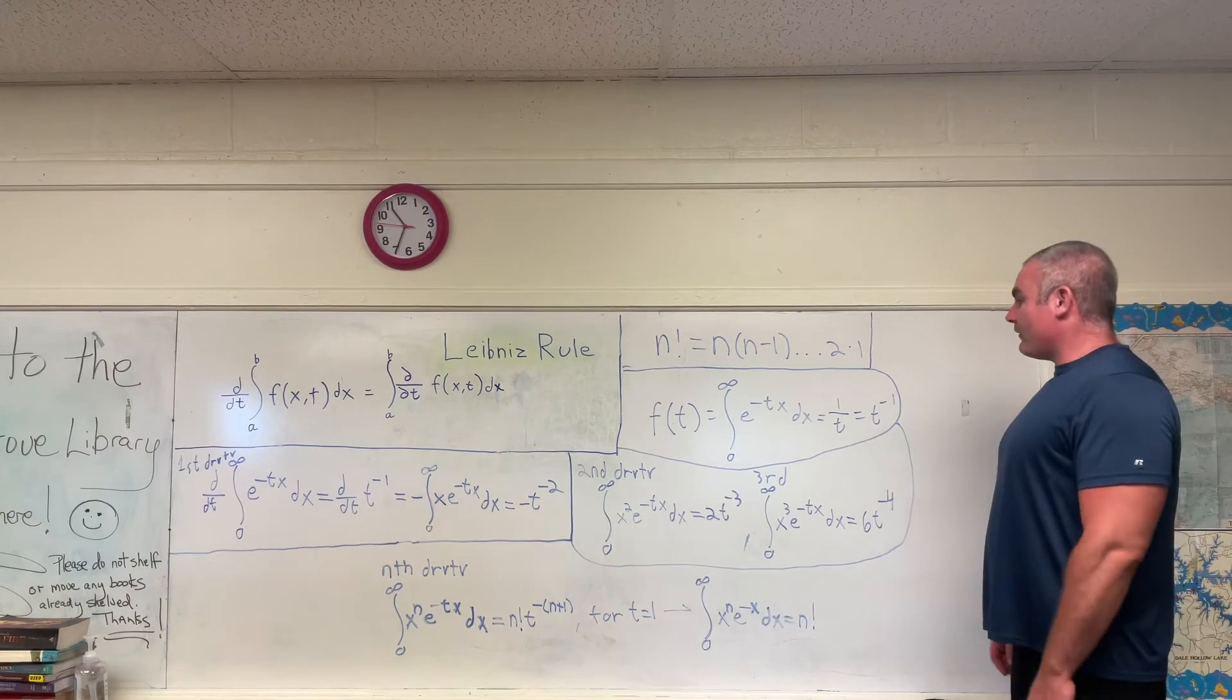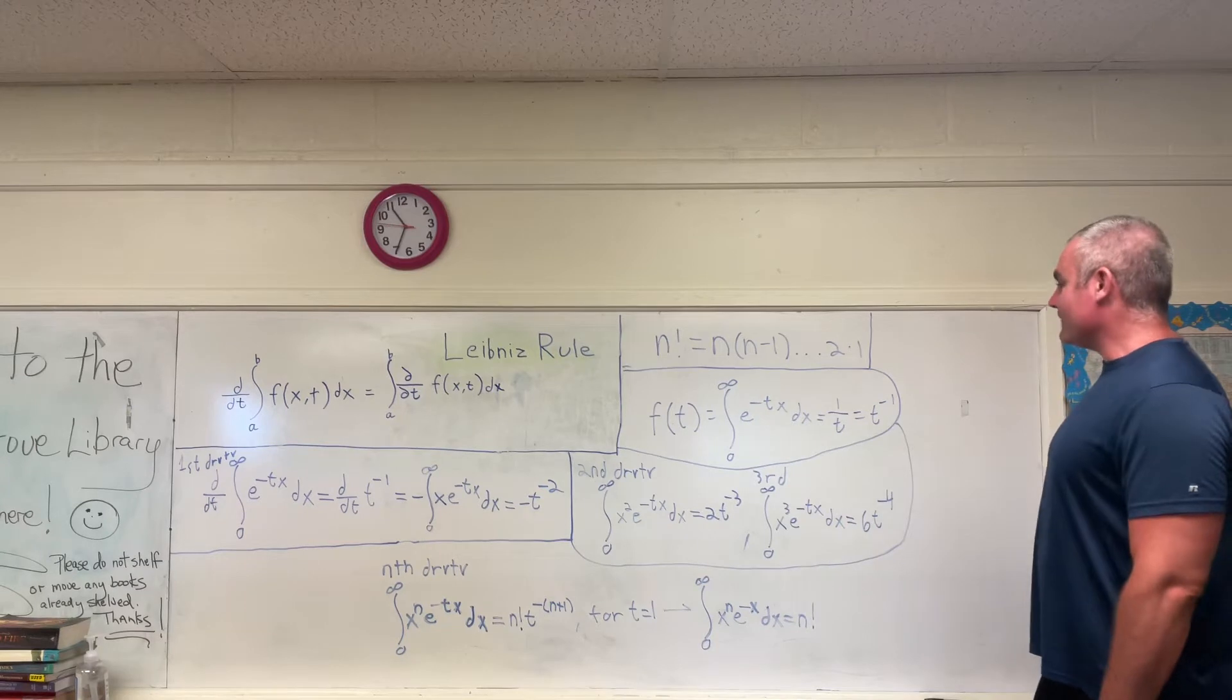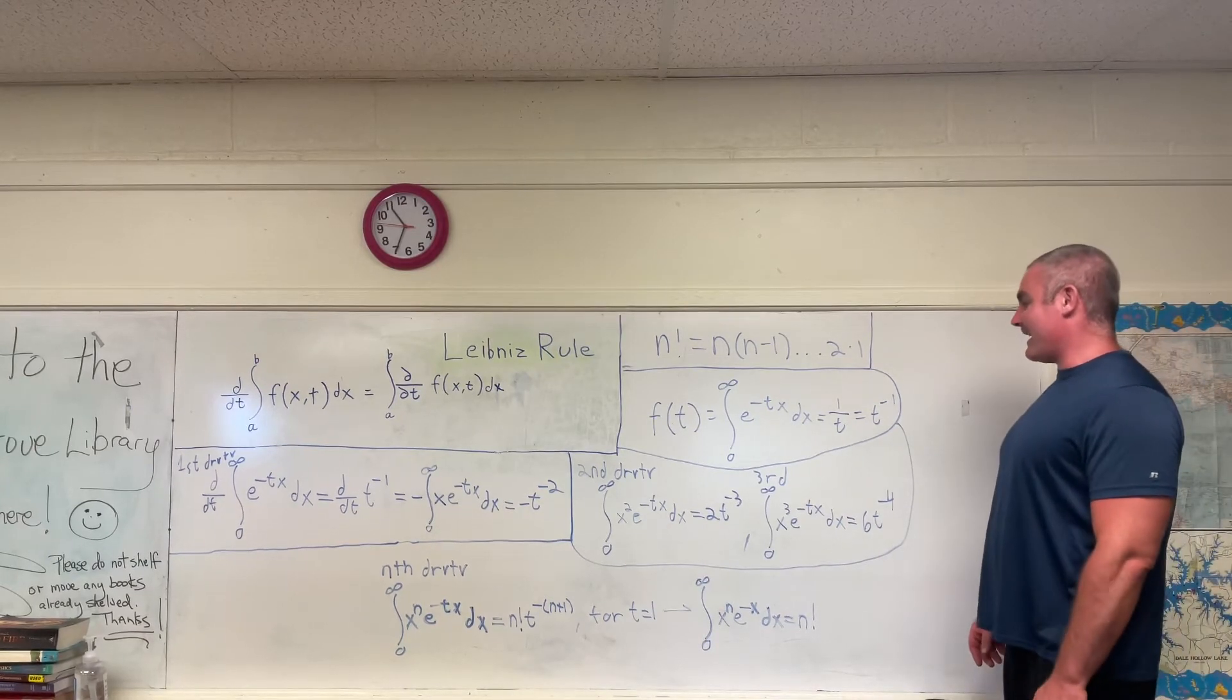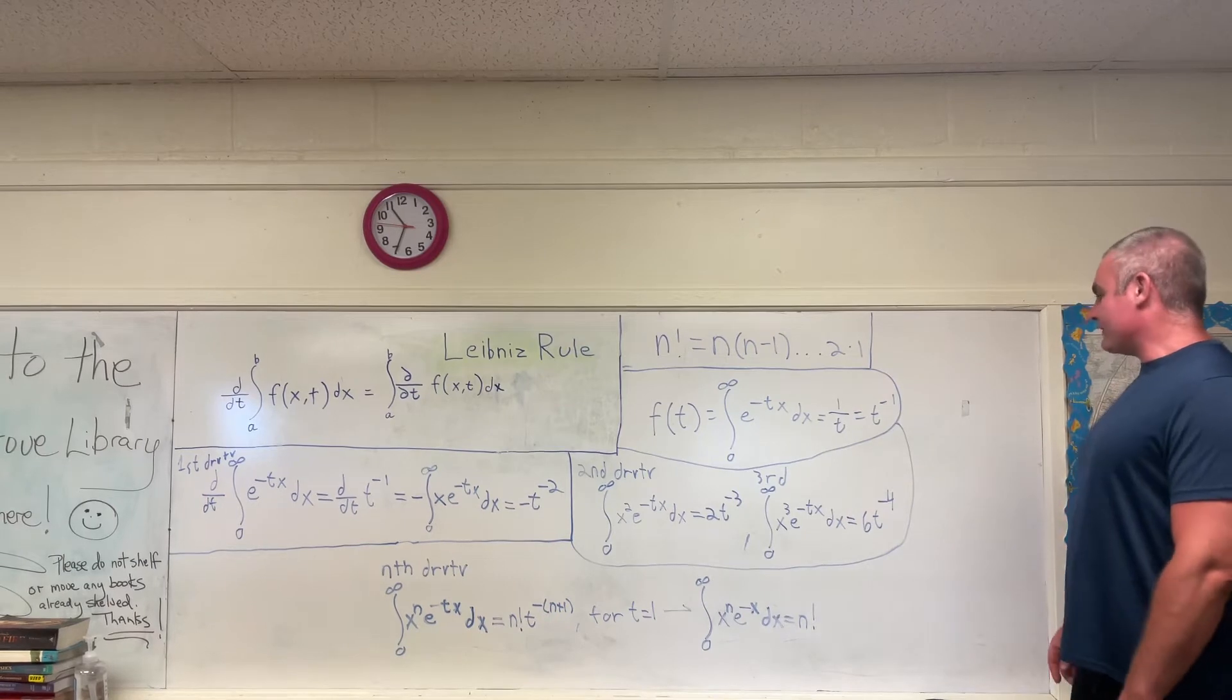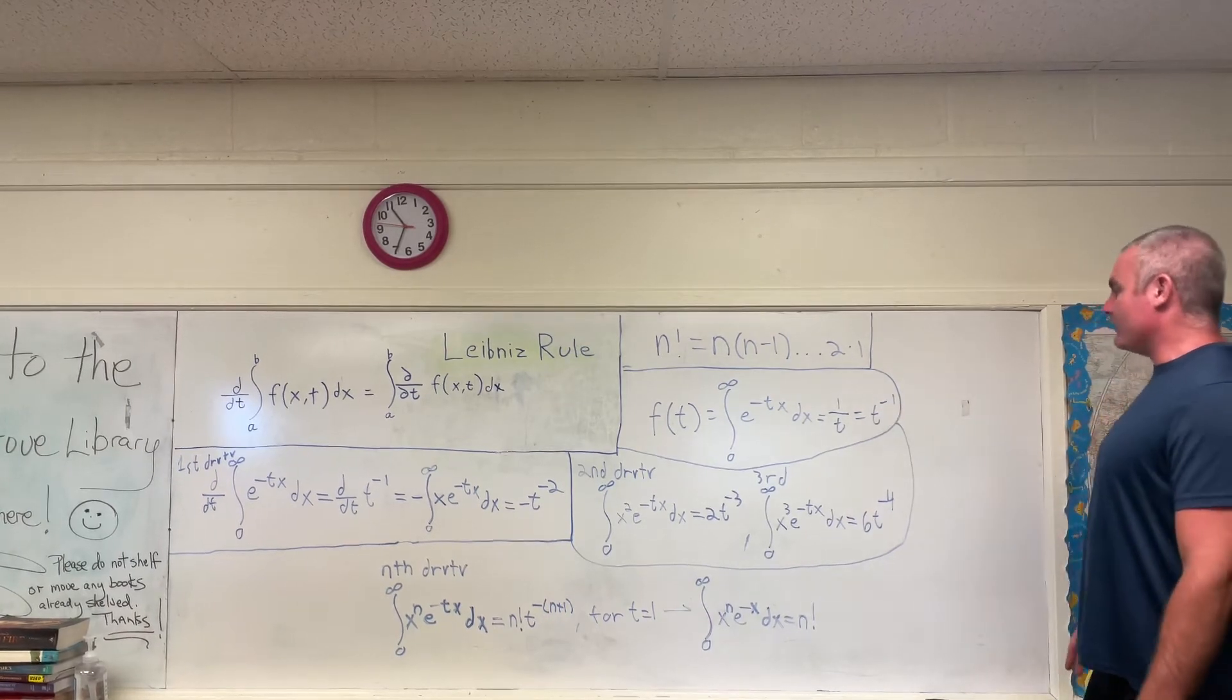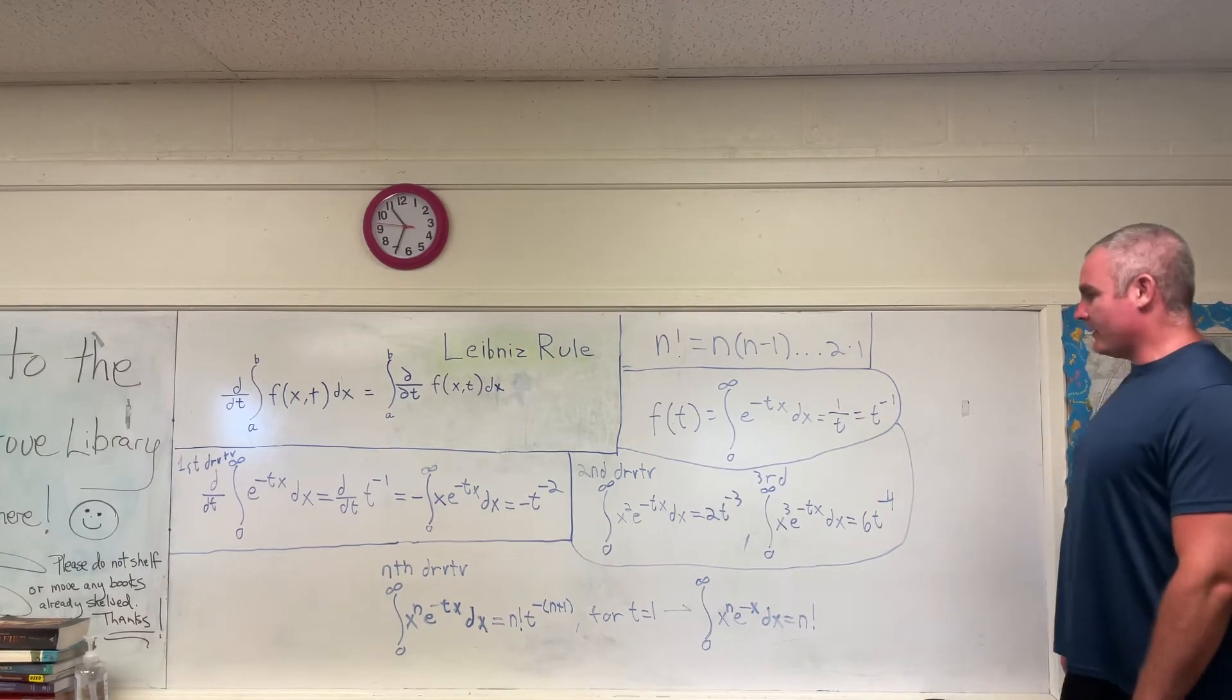So right off the bat, we're just going to create a function of t that's equal to the integral from 0 to infinity of e to the negative tx dx. That evaluates to 1 over t. And for the rest of this video, we're going to write that as t to the negative 1, because it's much easier to work with it that way.